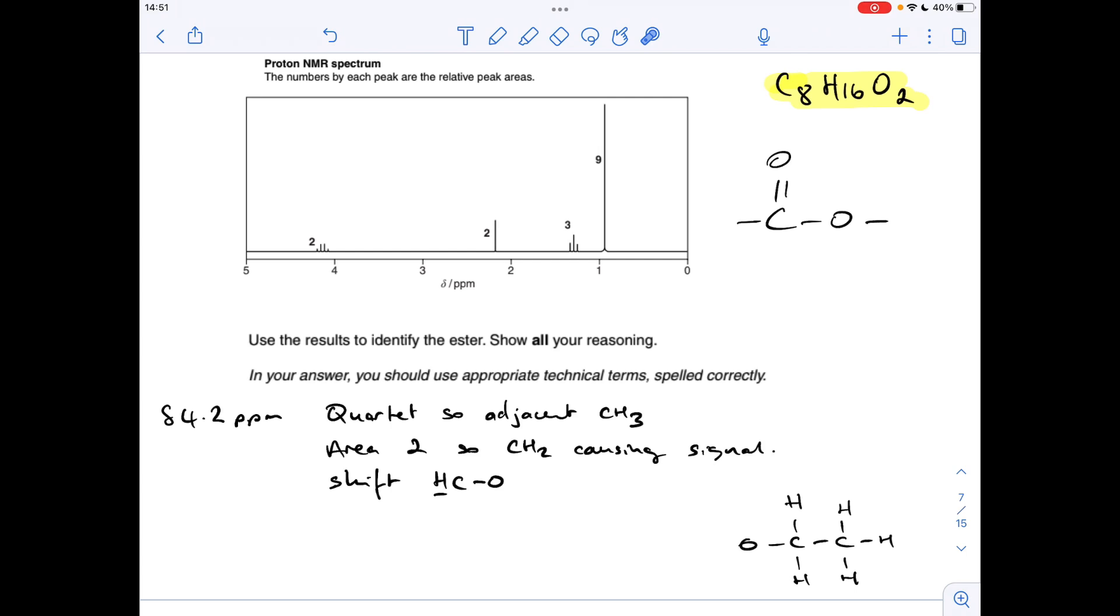So if we move on to this signal now, so we'll say that's a delta 2.2 ppm. That's a singlet, so there are no adjacent hydrogens. It's got an area of 2, so there's 2 hydrogens causing the signal, so CH2.